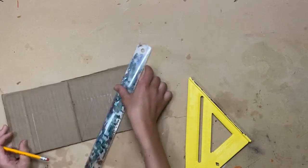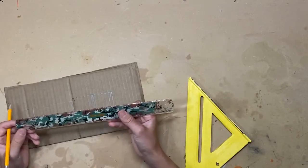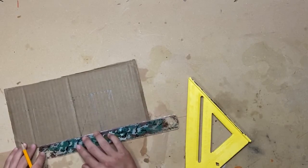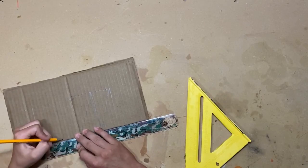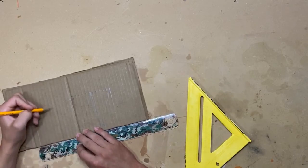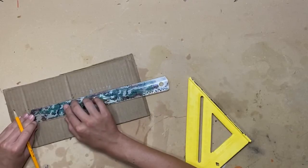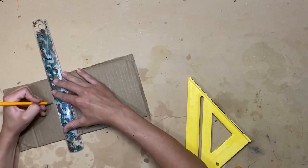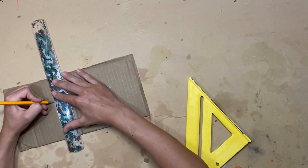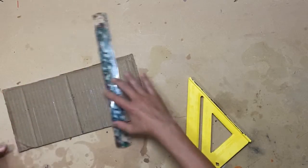Once you've done that, you're going to take a ruler again and measure 5 cm over. Once you have done that, you'll make a mark on the top and a mark on the bottom. Then, draw that line down from each spot, just like that.